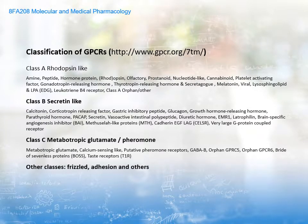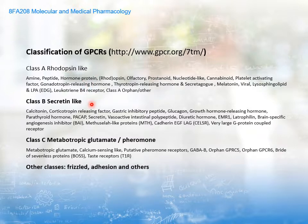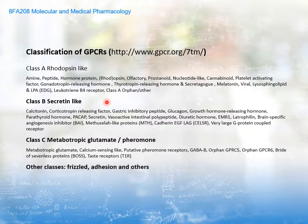G protein coupled receptors have been classified — this big family has been classified into different classes — and the most recent classification can be found at a dedicated website. You have Class A, which includes molecules similar to rhodopsin, and Class B, similar to secretin. Secretin, for those who may not remember, is actually the first hormone ever discovered — a gastrointestinal hormone released by the small intestine. Then there are two other classes, C and smaller classes. Among Classes A and B is where you find most of the hormones you have studied previously.